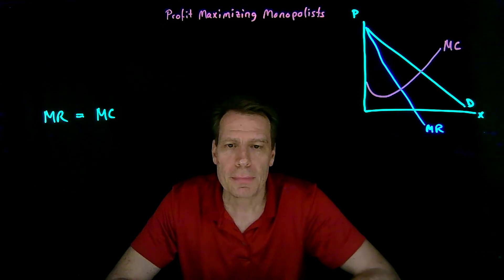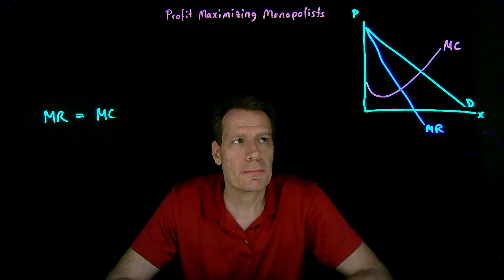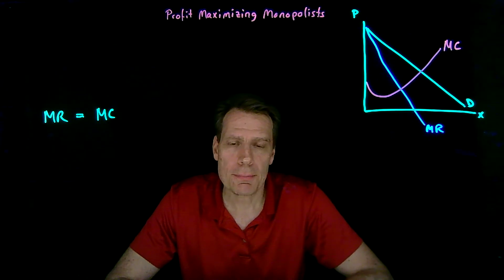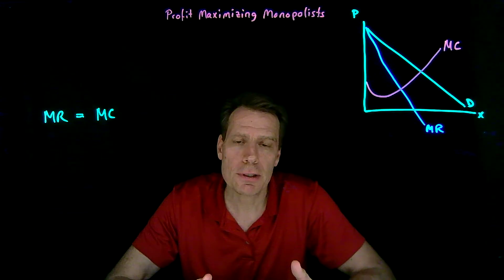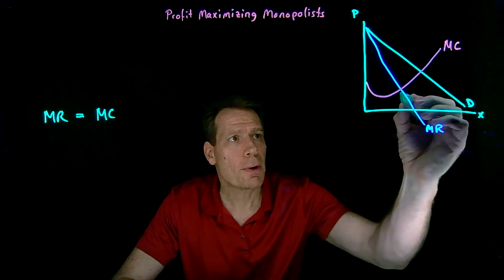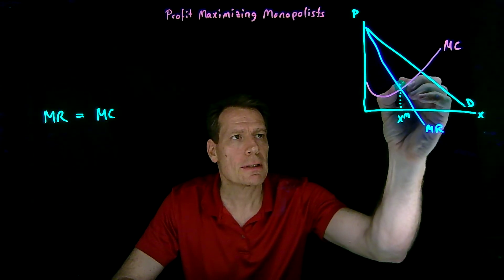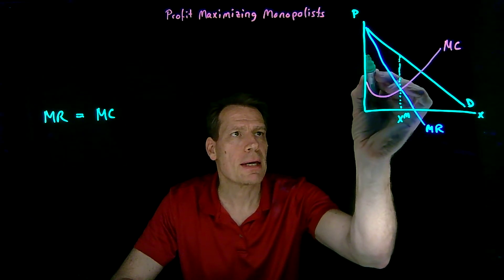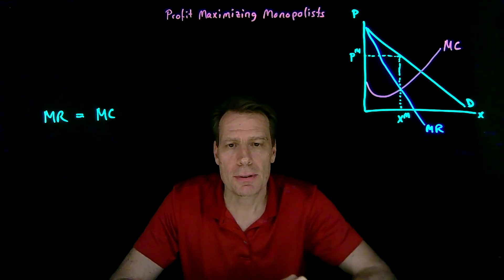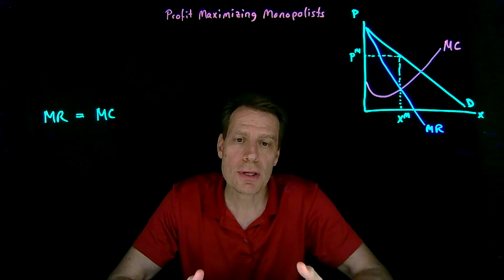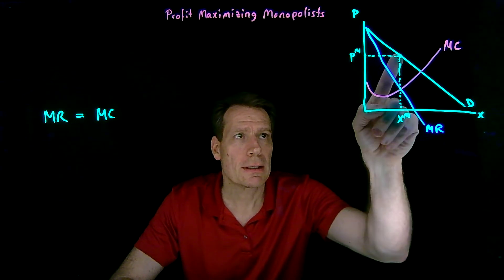So here we have our marginal cost — this could be a short-run or a long-run marginal cost, but let's think of it as a long-run marginal cost curve. Now we can apply the rule used in the second step of two-step profit maximization: marginal revenue has to be equal to marginal cost at the output level we choose. That happens where marginal cost intersects marginal revenue. So the monopolist is going to produce the monopoly quantity, and then sell that quantity at the price that the demand curve tells us we can sell it at — the monopoly price. Set marginal revenue equal to marginal cost, produce that quantity, and price accordingly.